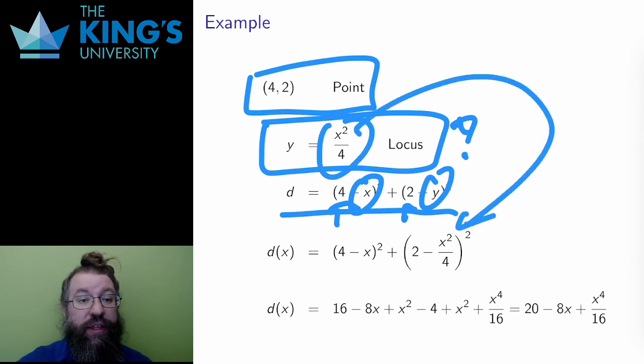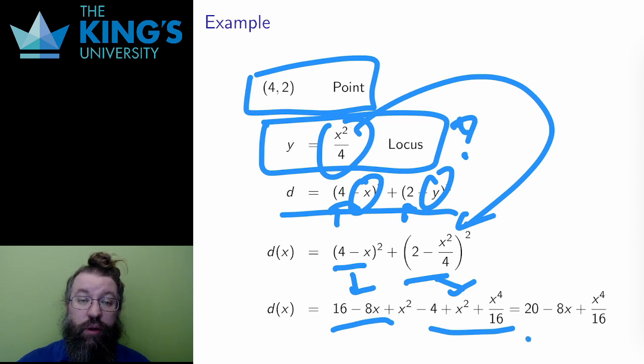Then I have these two binomials. I expand them both, foiling out all the terms to get these six terms. I can simplify this into a degree 4 polynomial, 20 minus 8x plus x to the 4 over 16. The x squared terms from the previous binomial expansions very conveniently cancel here. And this is the function I want to optimize.